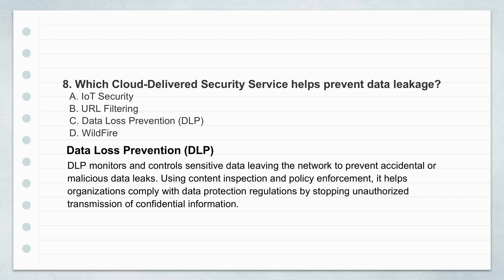Another CDSS is data loss prevention — DLP. DLP is all about protecting your sensitive data and preventing it from leaving the organization when it shouldn't. Think of it like a security guard for outbound data. It checks traffic to make sure confidential stuff — intellectual property, customer records, financials — isn't leaking out accidentally or maliciously. Protecting the crown jewels, essentially.